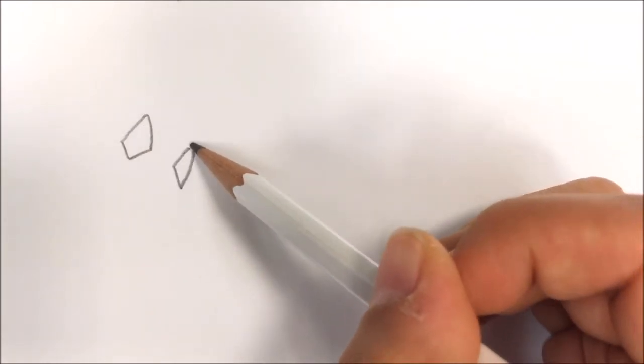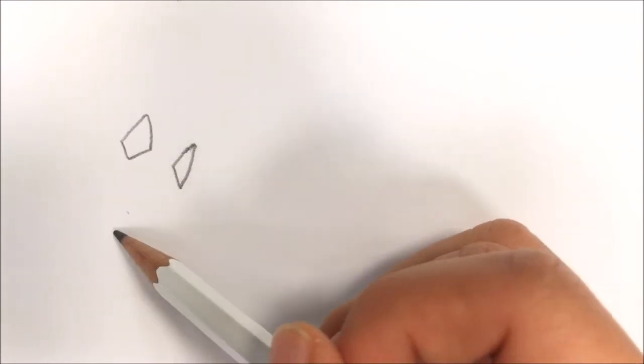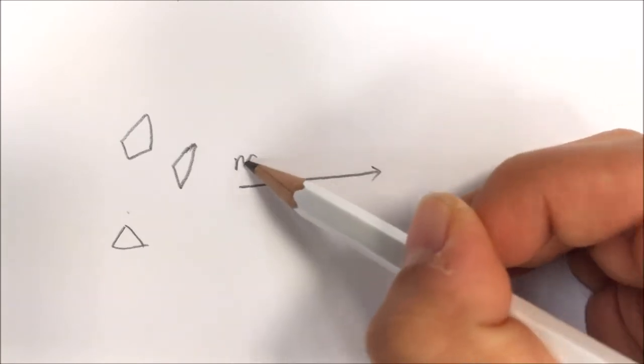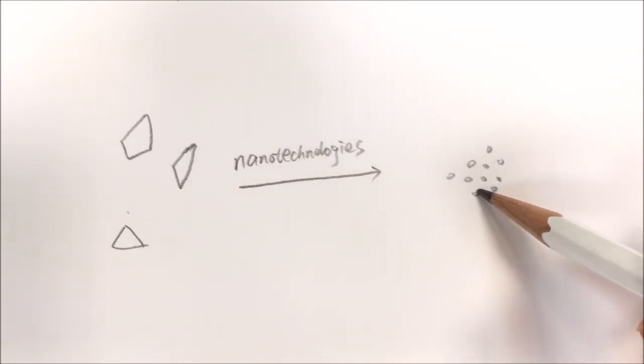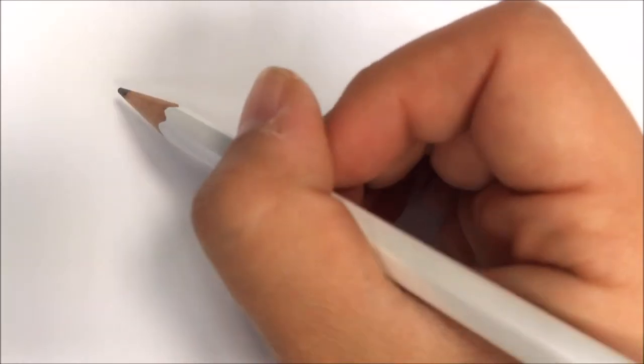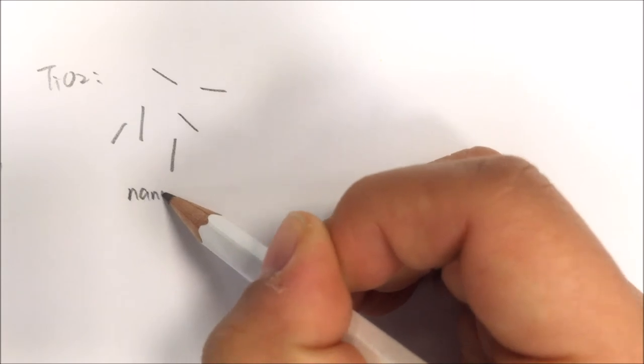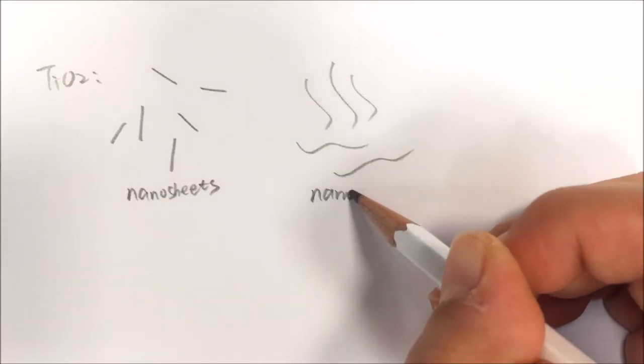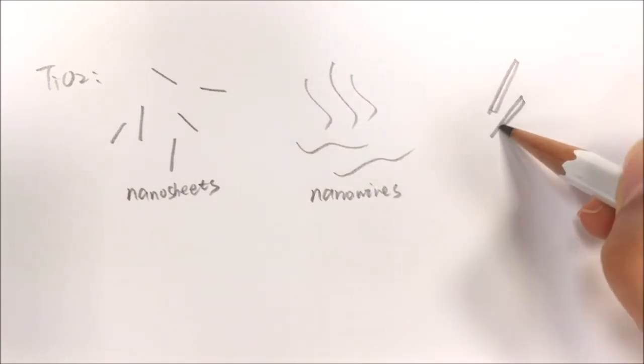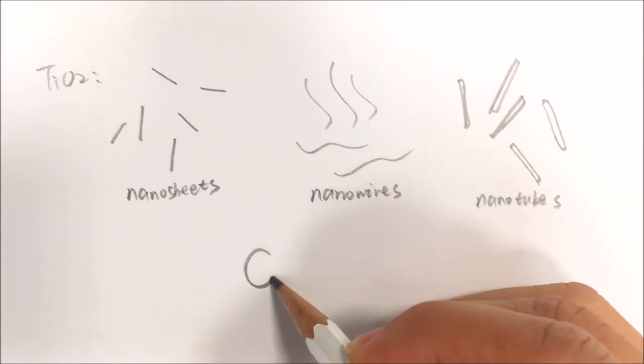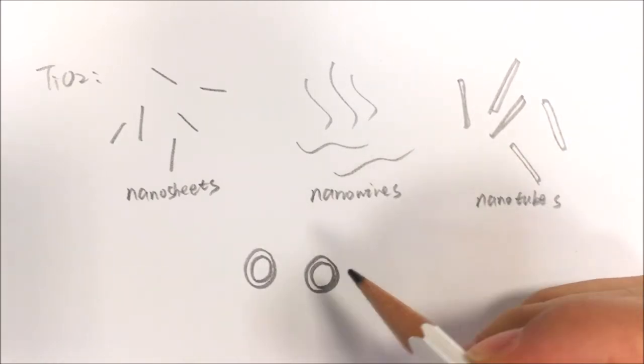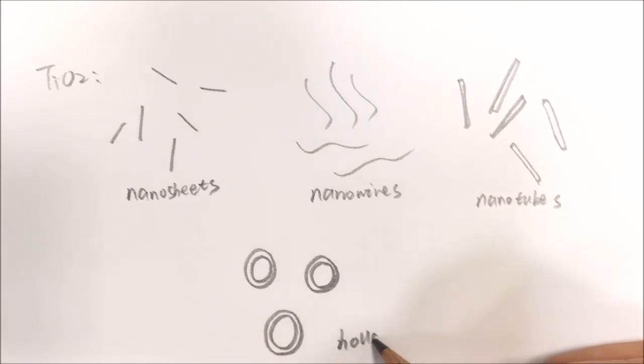Nanotechnologies help to make the photocatalyst work more efficiently. It will create smaller particle size and large surface area. One representative photocatalyst is TiO2. Lots of efforts have been spent to make different shapes of TiO2, like TiO2 nanosheets, TiO2 nanowires, TiO2 nanotubes and TiO2 hollow spheres. Those shapes will also be quite helpful in improving the photoreduction efficiency of TiO2.